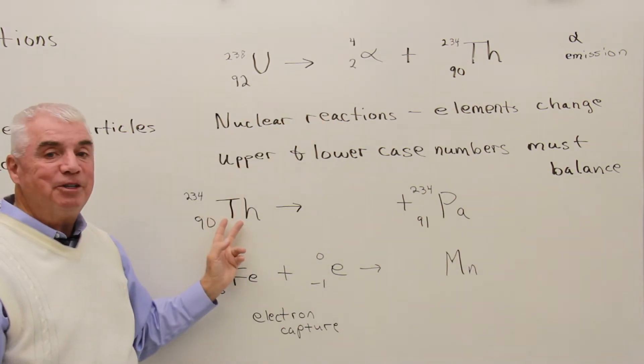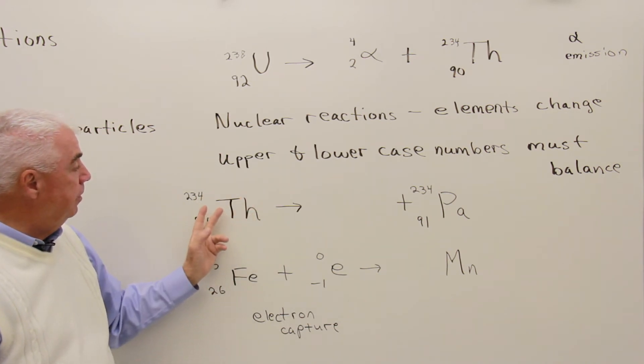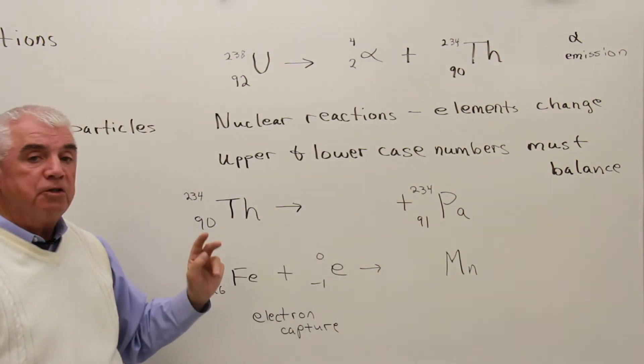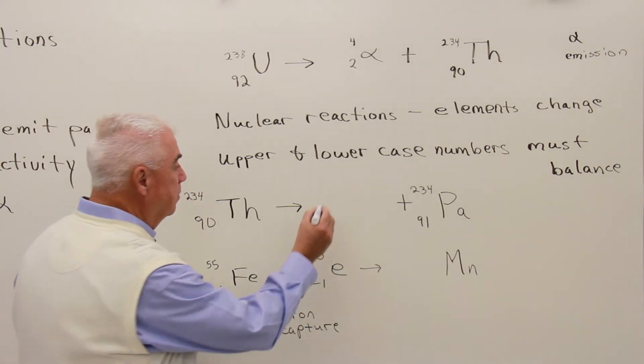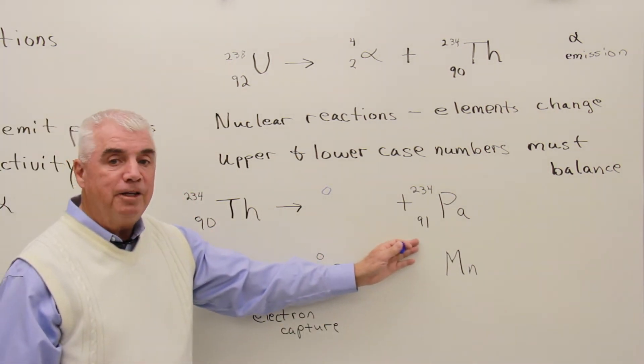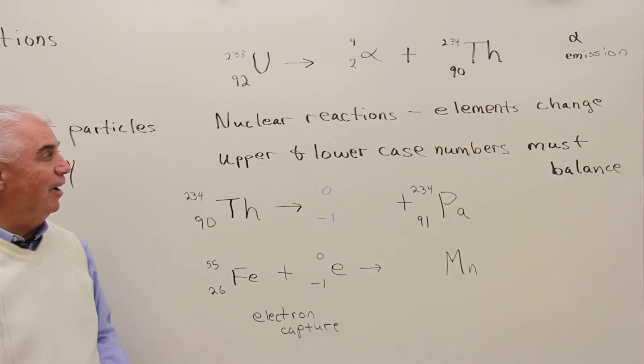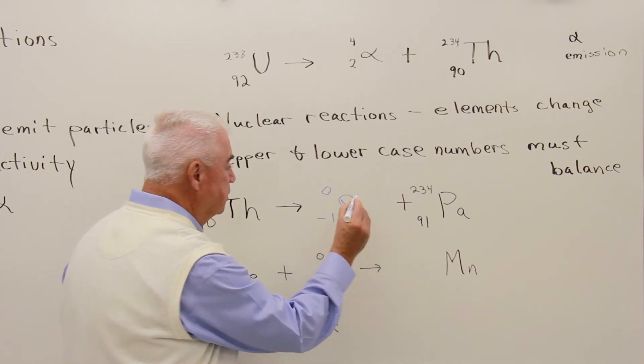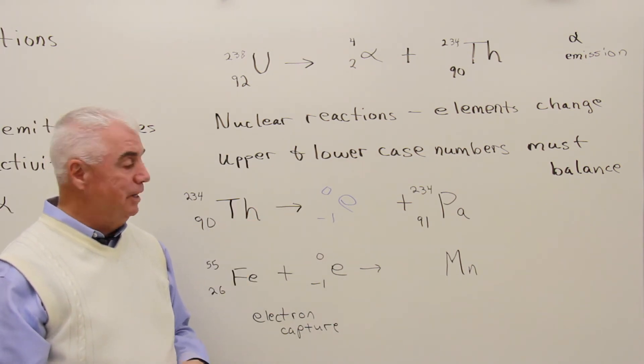So in this case, thorium has continued to disintegrate. It's giving off a particle. It's undergoing this phenomenon of radioactivity. And we noticed 234 protons and neutrons over on the right, 234 on the left. And so this uppercase number is going to be 0. 90 and 91. Well, we can make 90 on each side if we have a minus 1 over there. And then remembering your table of particles, this corresponds with a beta particle, an electron in essence. So here's an example of beta emission.